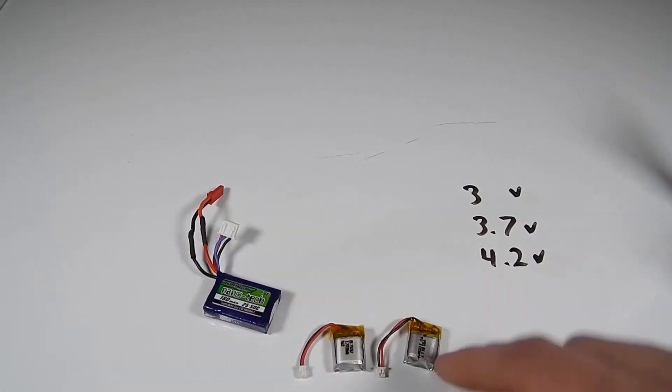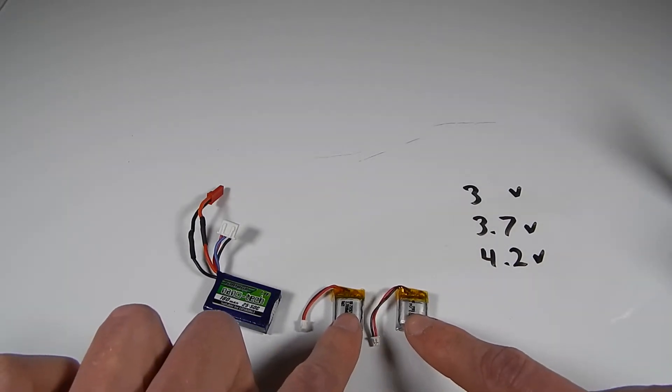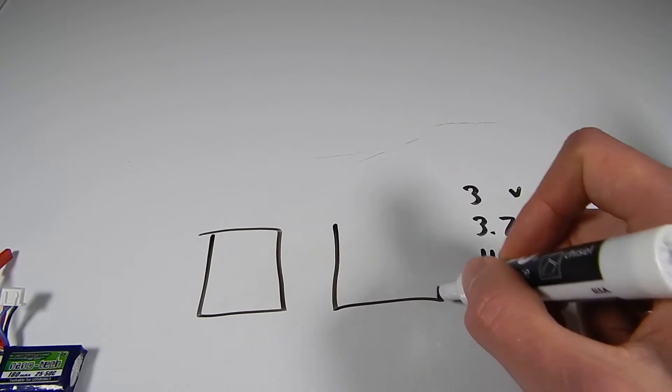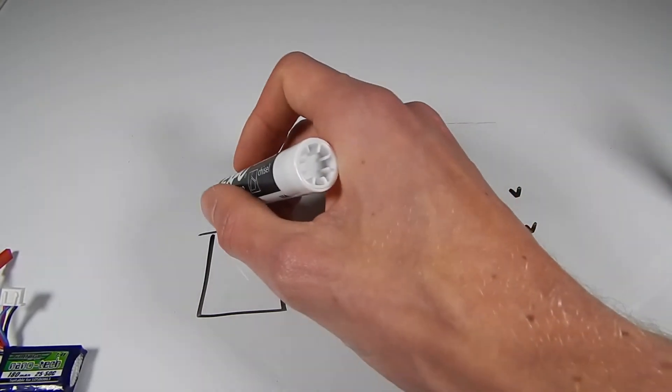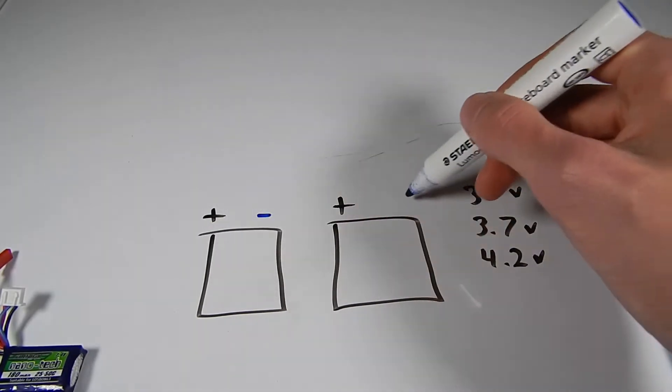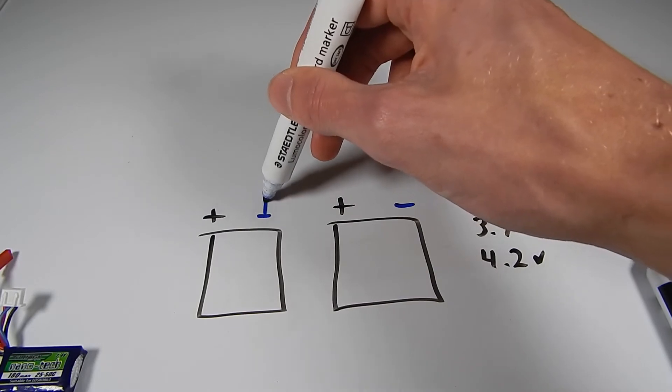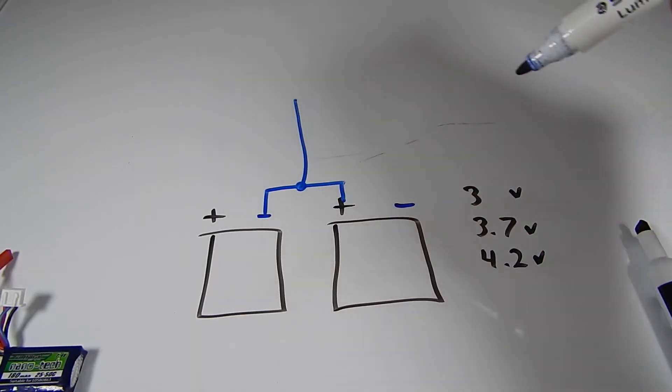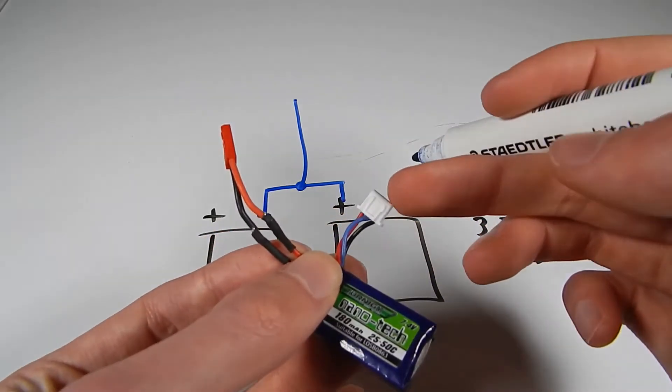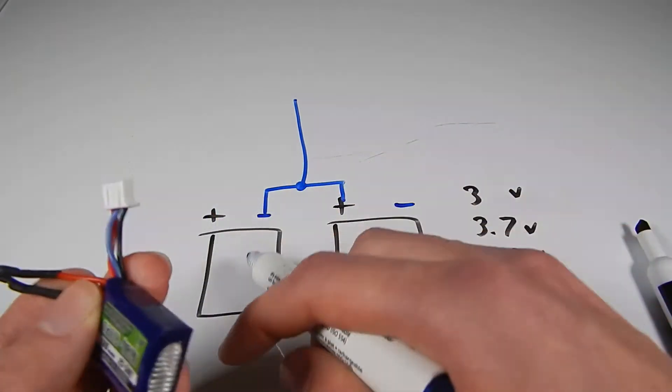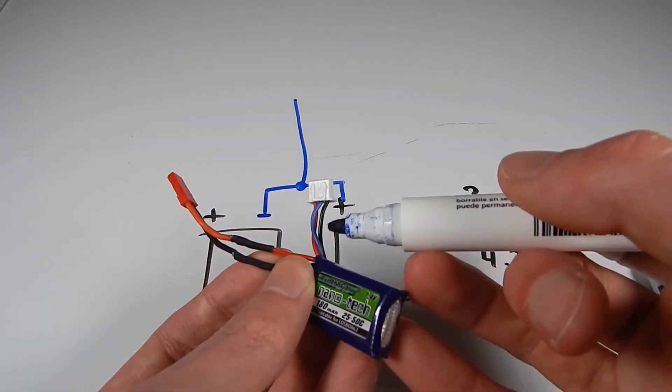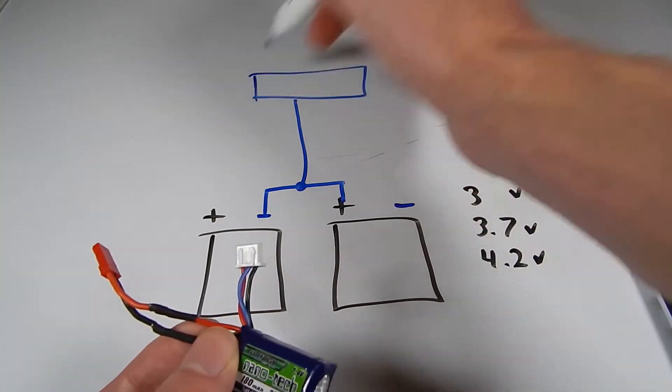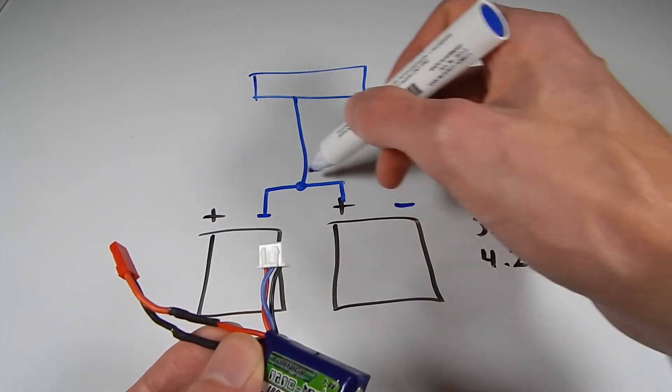Basically the way we're going to do this is you can see here we've got these two tiny little one cell batteries and we're essentially going to create a little circuit like this. We have the two little one cell batteries and they both have a positive and they both have a negative on them. We're going to wire the negative of one battery into the positive of the other battery and then also off this connection we're going to run a plug out. You can see here we've got a little balance lead which helps the charger balance this thing up and make sure that both of the cells are sitting at the right voltage which is 4.2 volts.